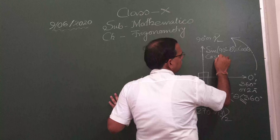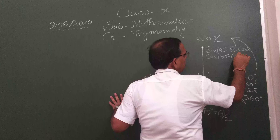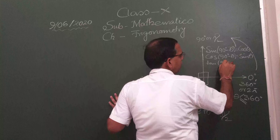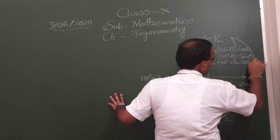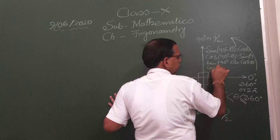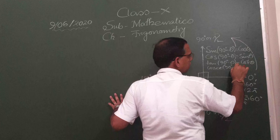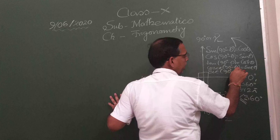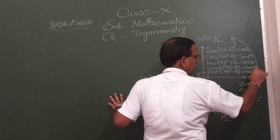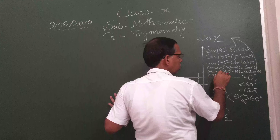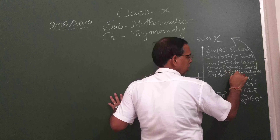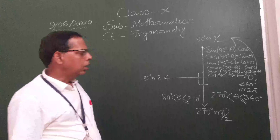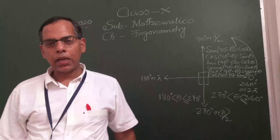The first quadrant transformations (90° - θ): cos(90° - θ) = sin θ; tan(90° - θ) = cot θ; cosec(90° - θ) = sec θ; sec(90° - θ) = cosec θ; cot(90° - θ) = tan θ. So sine and cosec are reciprocals, cos and sec are reciprocals, and tan and cot are reciprocals.